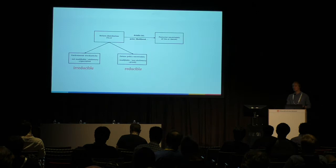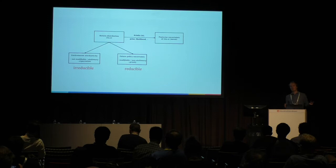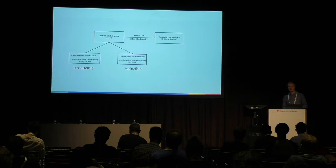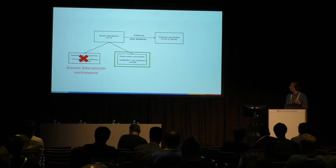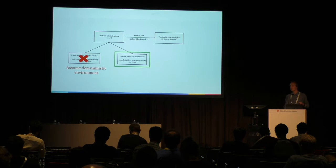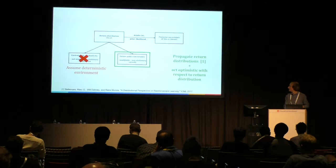To make this clearer, the return distribution is induced by two sources of stochasticity. One is the environment — stochastic transition and reward models — which is irreducible and you should act on the expectation. The second is that your future policy might still be stochastic, especially early in learning, and that also contributes to the return distribution. For this paper, we assume a deterministic environment, so the return distribution is entirely induced by future policy uncertainty. Then you can act optimistically with respect to it.